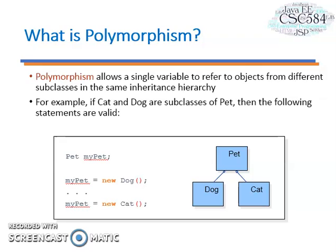In Java, all Java objects are polymorphic since any object will pass the is-a test for their own type and for the class object. It is important to know that the only possible way to access an object is through a reference variable. A reference variable can be of only one type. Once declared, the type of a reference variable cannot be changed.